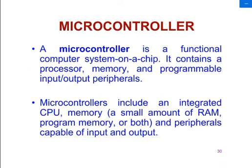A microcontroller includes an integrated CPU, memory — a small amount of RAM, program memory, or both RAM and program memory — and peripherals capable of input and output. They are designed so that you can directly use those peripherals. In many cases when there is a large requirement of power, the microcontroller is not capable of providing a huge amount of power. Its power range is up to 50 milliamperes, which is very less, and it varies from microcontroller to microcontroller because it is designed for control, not as a power source.